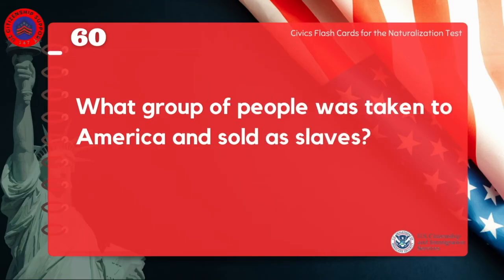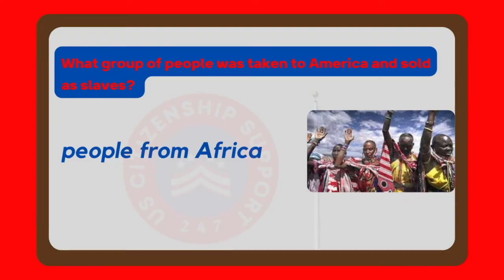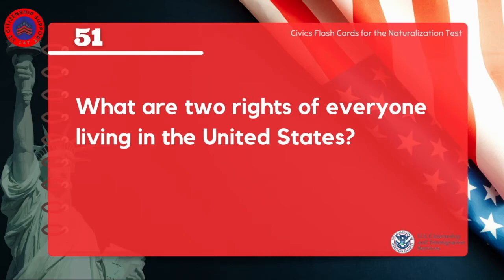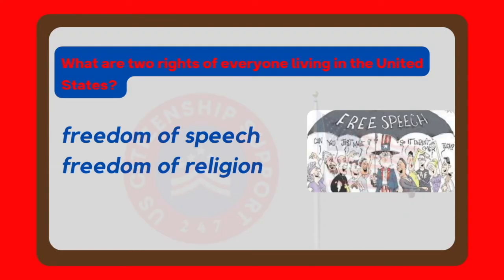What group of people was taken to America and sold as slaves? People from Africa. What are two rights of everyone living in the United States? Freedom of speech, freedom of religion.